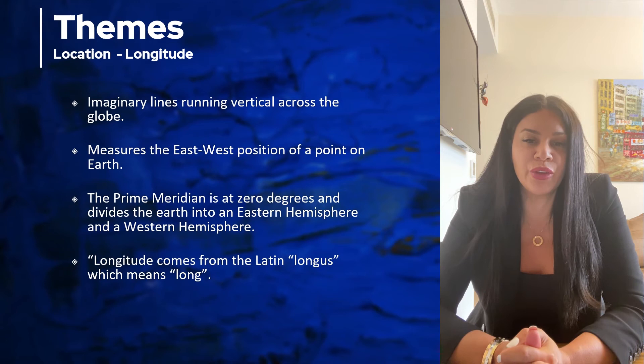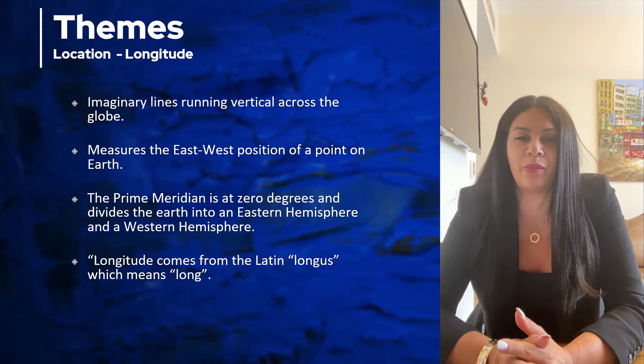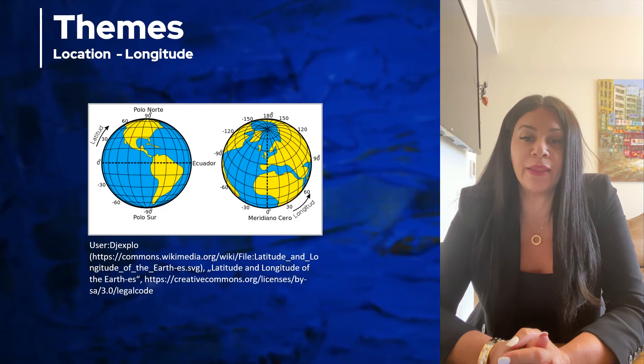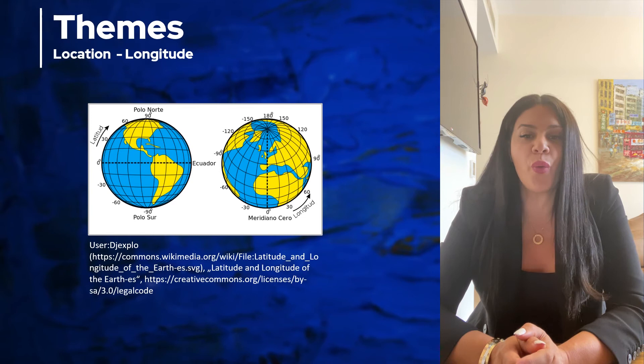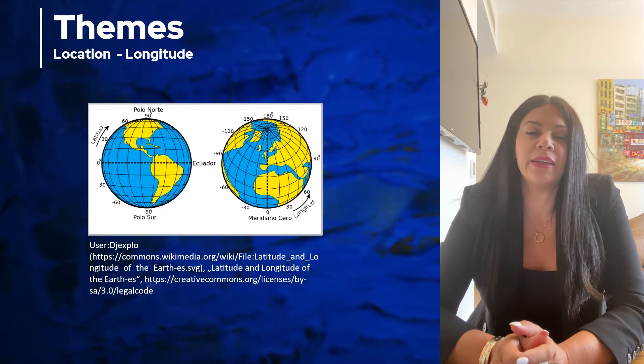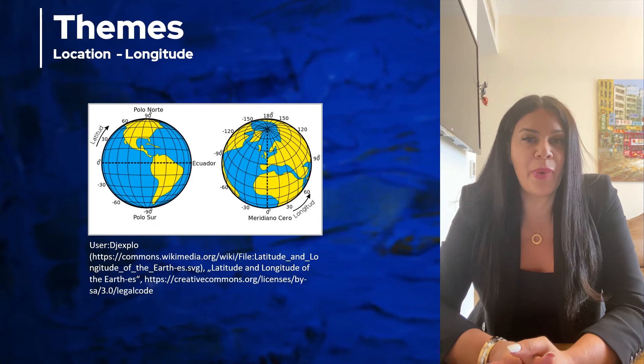The prime meridian, which is at zero degrees longitude, divides the earth into an eastern hemisphere and a western hemisphere. Longitude is measured in degrees starting at the prime meridian at zero degrees, going east to 180 degrees or west to 180 degrees on the other side of the world at the international date line. The time in the world is actually based on longitude, and each time zone is about 15 degrees longitude.